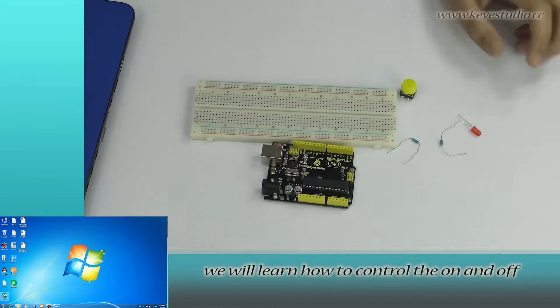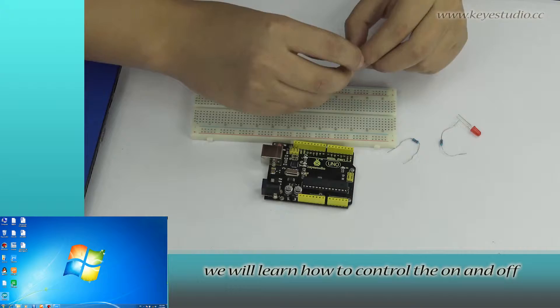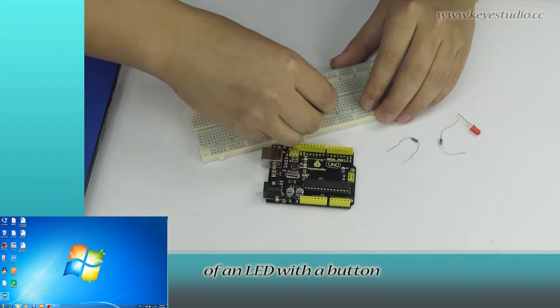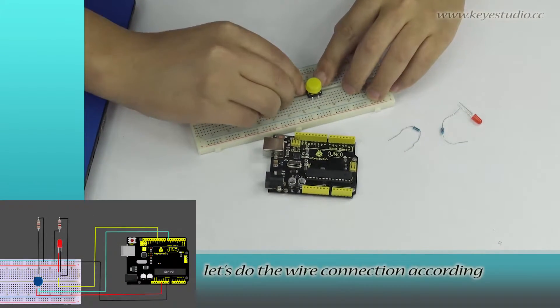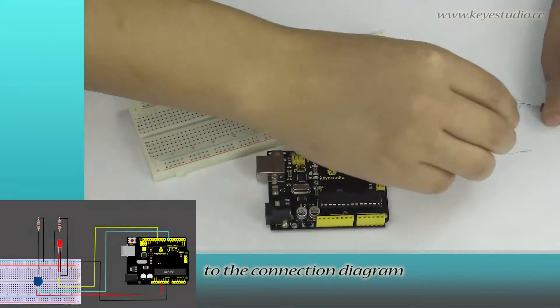In this lesson, we will learn how to control the on and off of an LED with a button. First, let's do the wire connection according to the connection diagram.